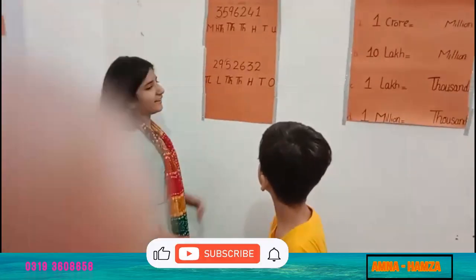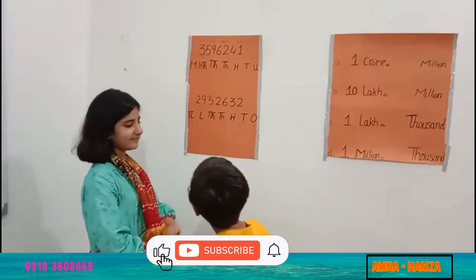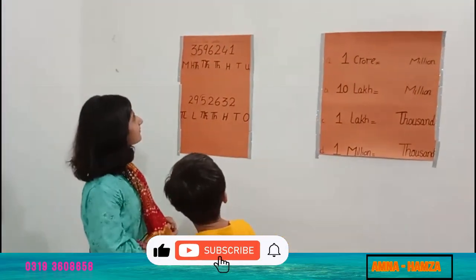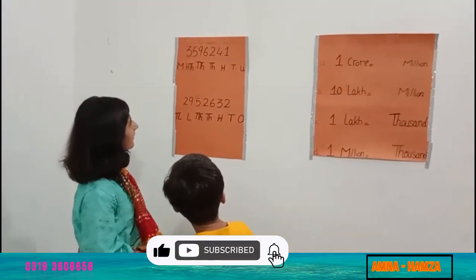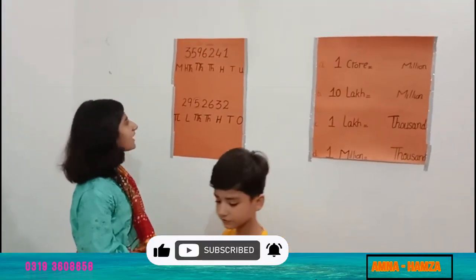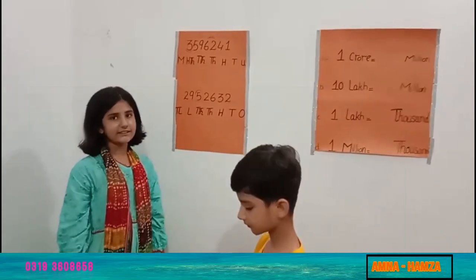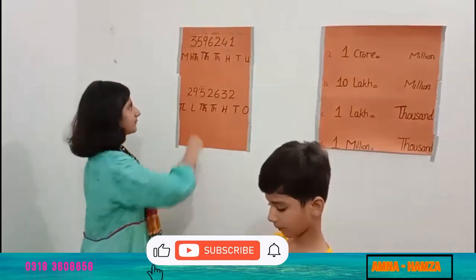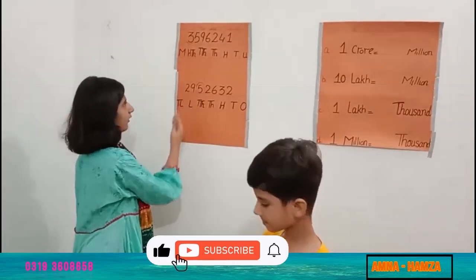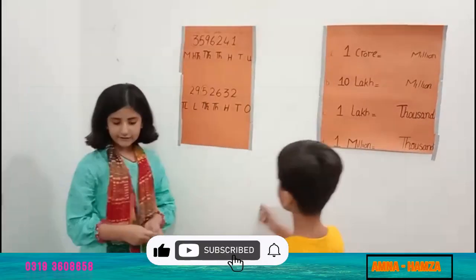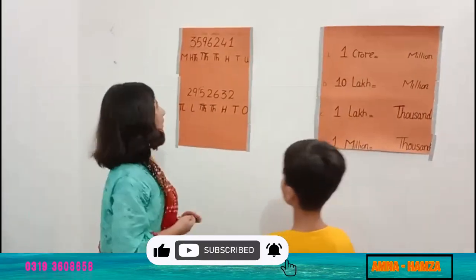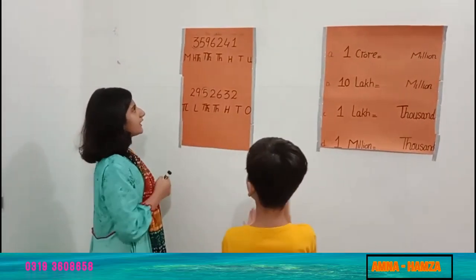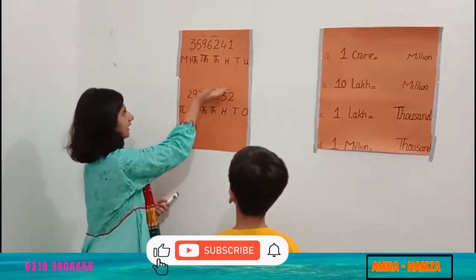Read it. Find the place value of the ringed digits. Ring digits means that it has a ring. First of all, I will tell you that we will write their values.